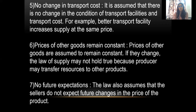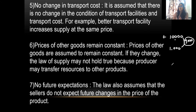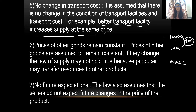The fifth assumption is no change in transport cost. Suppose I am bringing goods from a particular city and my transport cost is 10,000 rupees, but if I buy locally I can get the same commodities for 1,000 rupees — a difference of 9,000 rupees that you would cover by increasing the price of your commodity. Transportation affects supply, so we assume transport cost will remain constant. Better transport facilities increase supply at the same price.